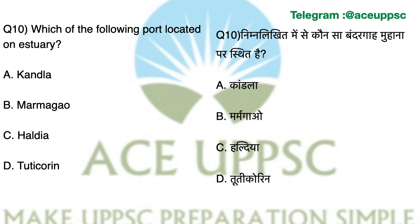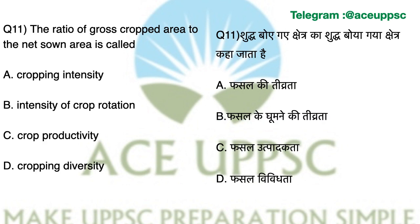The answer is B: Marmagao. Marmagao is a very important port in Goa and it is situated at the entrance on an estuary. Question number 11: The ratio of gross cropped area to net sown area is called — the answer is A: Cropping Intensity. Cropping intensity is the ratio of total cropped area (gross cropped area) to the net sown area.